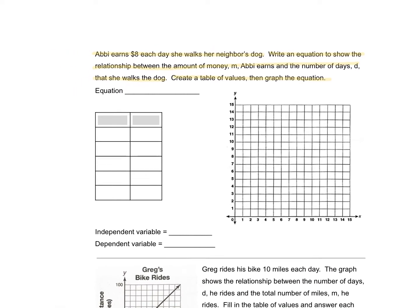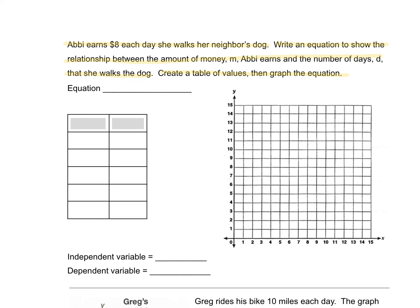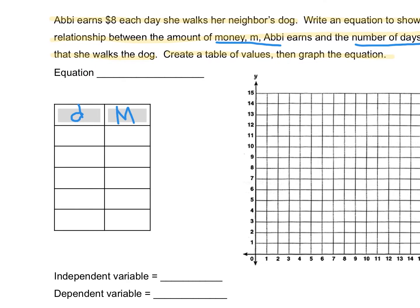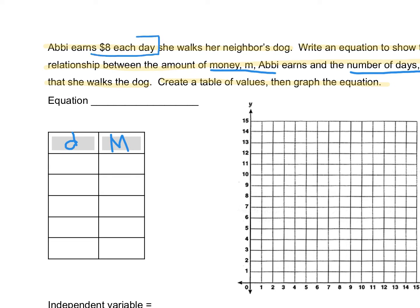All right, so let's think about what we know. She earns $8 each day she walks her neighbor's dog. So we are looking for the relationship between the money she earns and the number of days that she walks the dog. In my table over here, I'm going to put d in the first column, which represents the number of days, and I'm going to put m in the second column. That's the money that she earns. We know she earns $8 each day she walks their dog. So if she walks the dog one day, she's going to earn $8. If she walks the dog two days, she would earn $16. If she walks the dog three days, $24. If she walks the dog for four days, she will earn $32. And if she walks the dog all five days of the school week, she is going to earn $40.